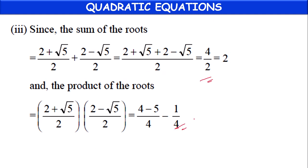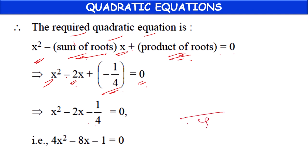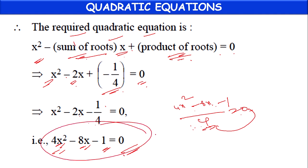Now we have alpha + beta = 2 and alpha × beta = -1/4. The required quadratic equation is x² - (sum of roots)x + (product of roots) = 0, which gives x² - 2x + (-1/4) = 0. Taking LCM as 4: 4x² - 8x - 1 = 0. So 4x² - 8x - 1 = 0 is the quadratic equation which can be formed with roots (2 + √5)/2 and (2 - √5)/2.